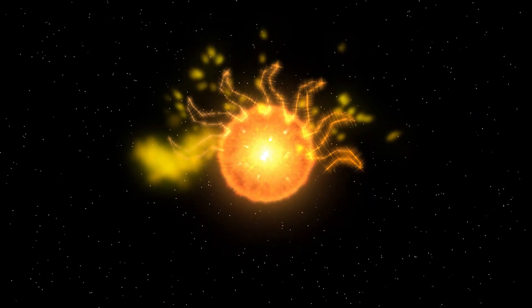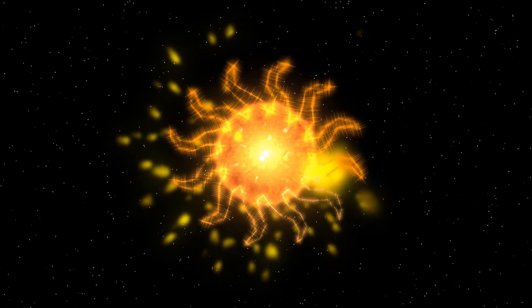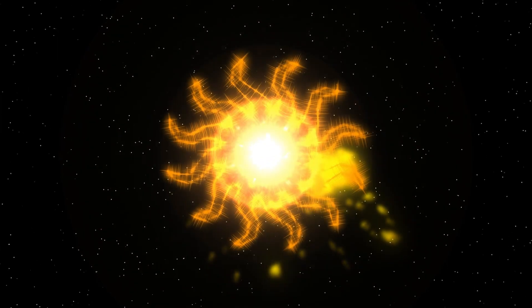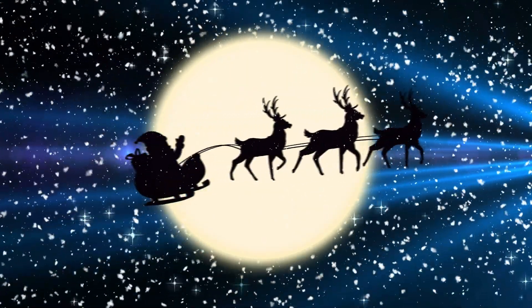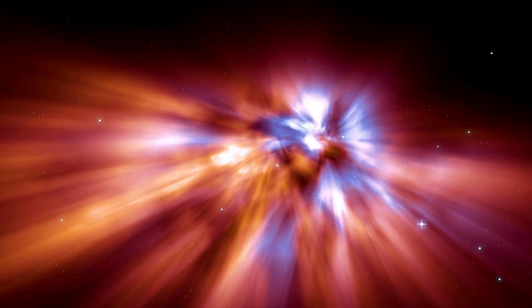As a massive star nearing the end of its life cycle, Betelgeuse is incredibly vast. If it were placed at the center of our solar system, its immense size would extend all the way to the orbit of Jupiter.